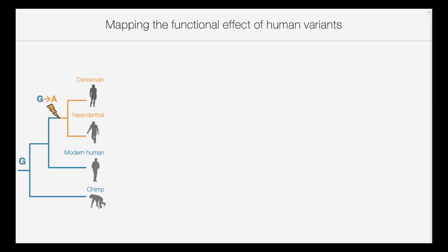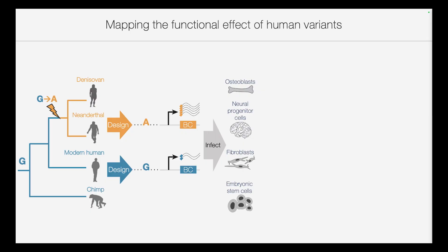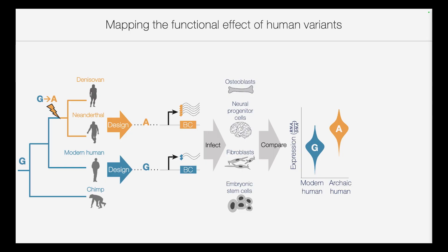For each variant that separates these human lineages, we design two constructs — one for the archaic human and one for the modern human. We then infect them into four different cell types that represent key systems in human evolution, identify key regulatory variants that alter gene expression, and finally attempt to link this to their possible phenotypic effects.